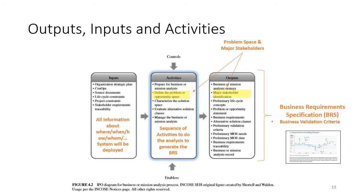The inputs, listed on the left, are pretty much everything you would ever need to understand the context of the enterprise. You need to understand the CONOPS — the way the system works today — the life cycle constraints, project constraints, and of course the stakeholders. We'll come back and talk about the importance of stakeholders in a minute.